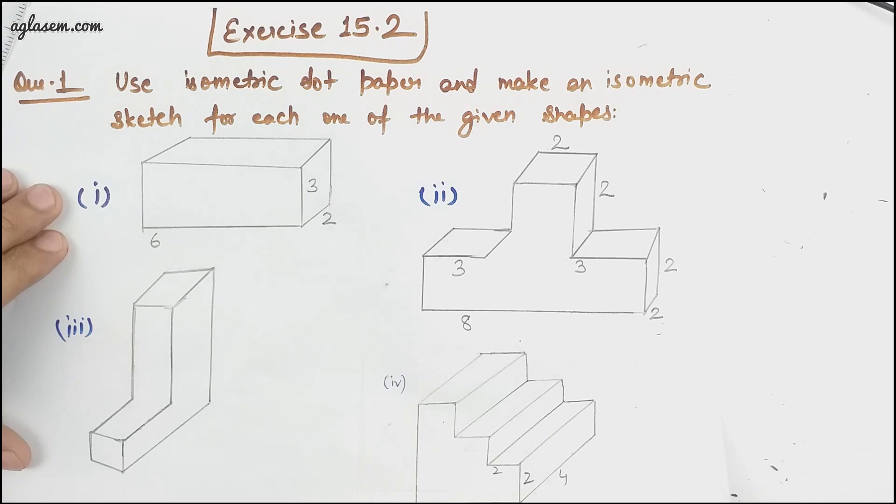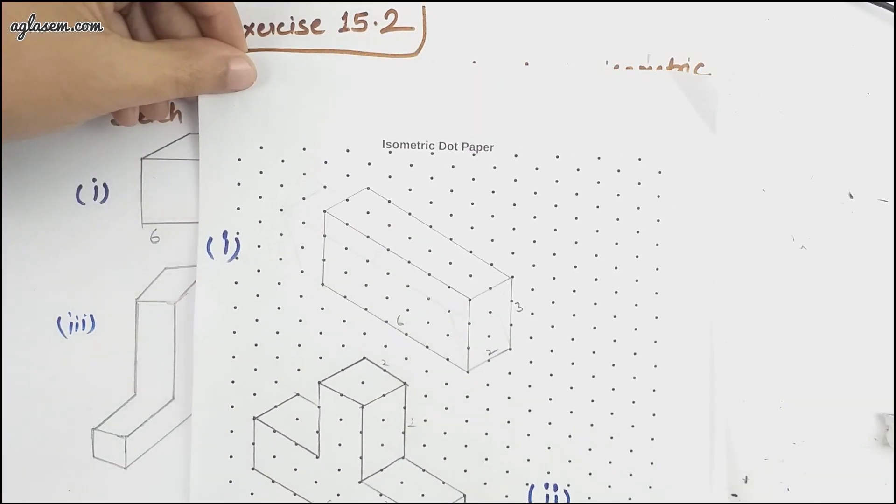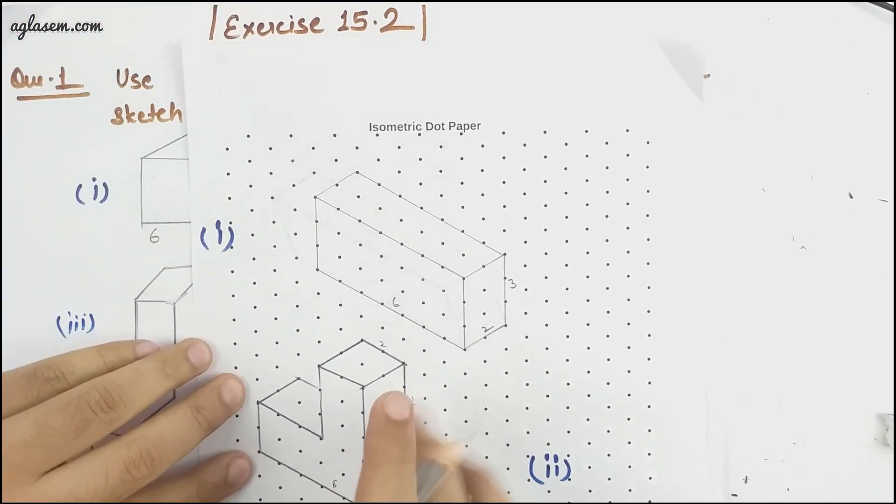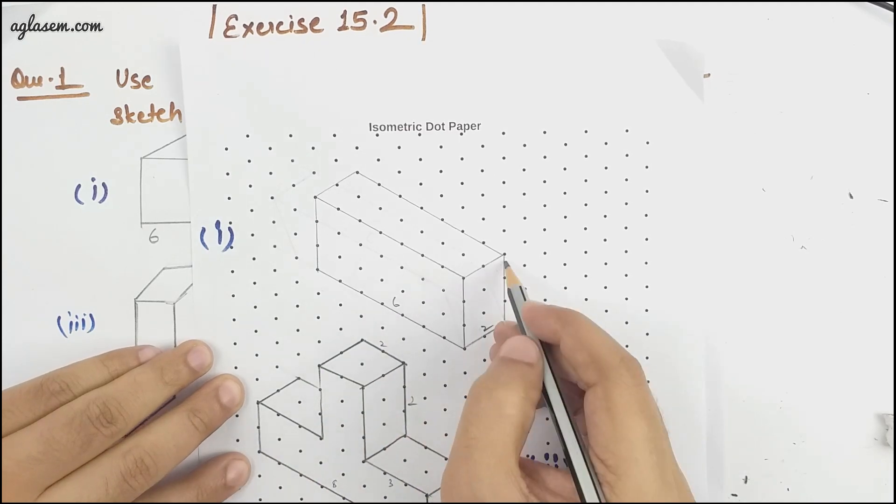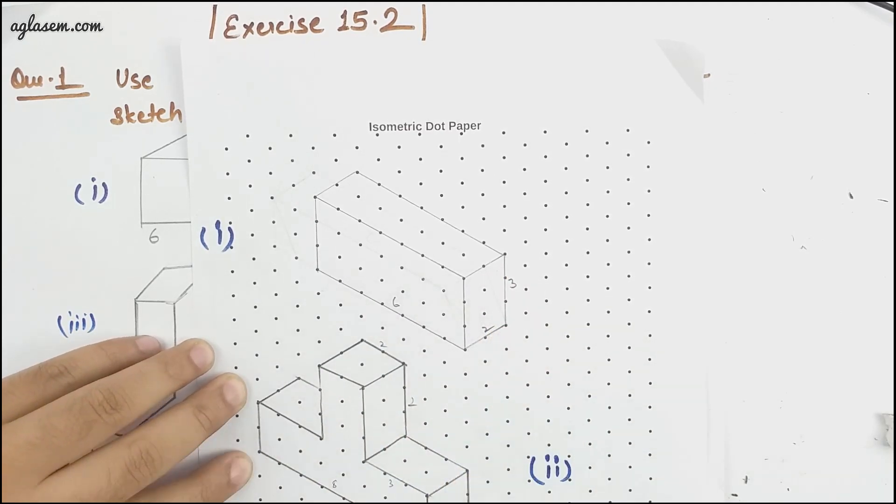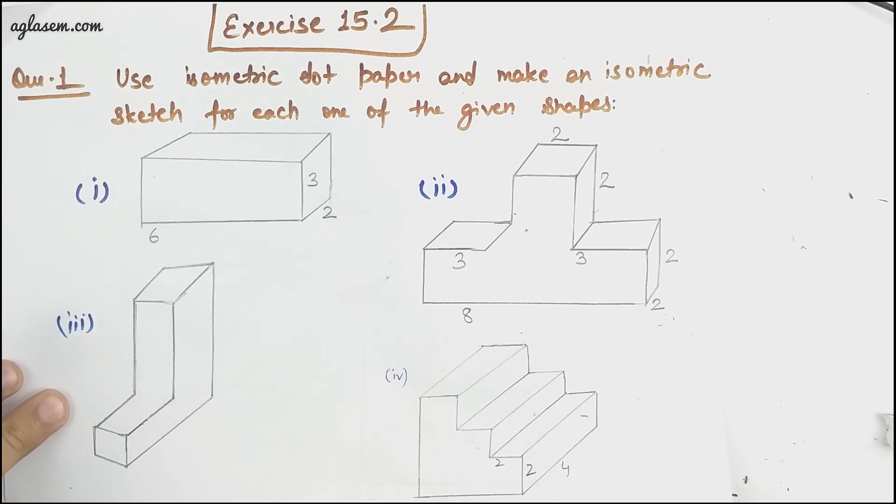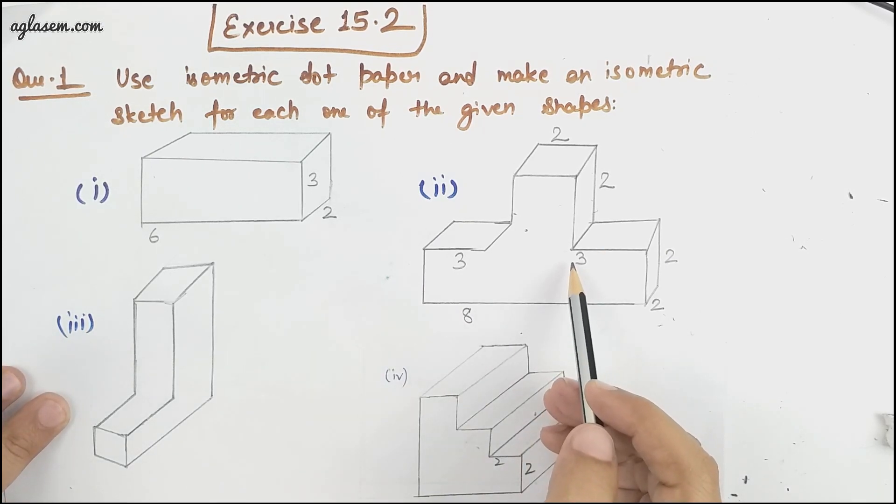So the first figure is a cuboid. This is how it will look like. See we have six this side, three this side and two this side. Coming to figure two, so we have this die that is usually used to award the various candidates who secure one, two, three positions.